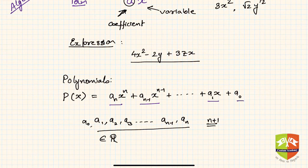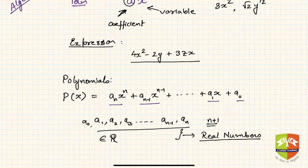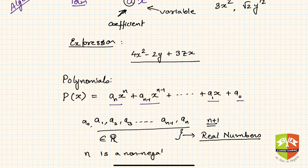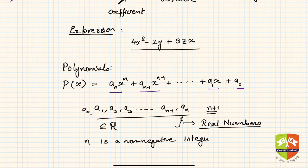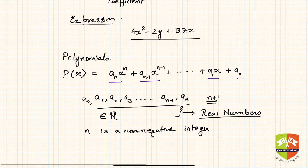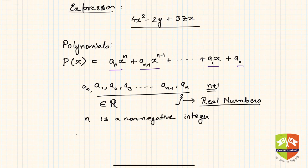All these coefficients belong to the set of real numbers — they have to be real numbers. There are complex numbers as well, which you'll study later, but here we confine ourselves to real number coefficients. The variable is x, and n is a non-negative integer — meaning zero or any positive integer — so n is essentially a whole number. Expressions of this kind are called polynomials.